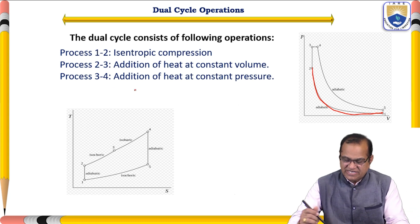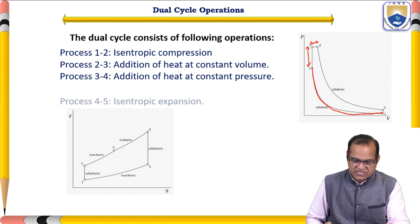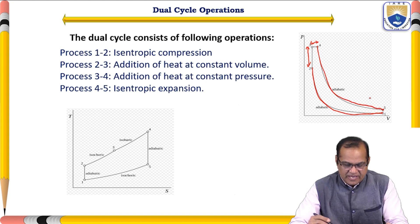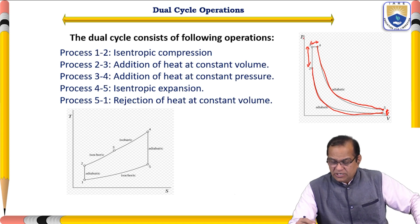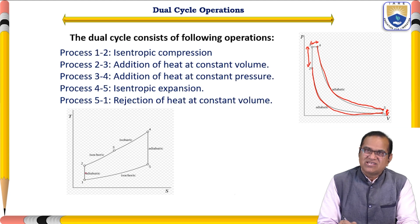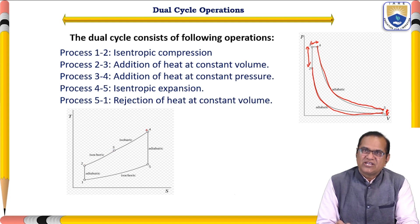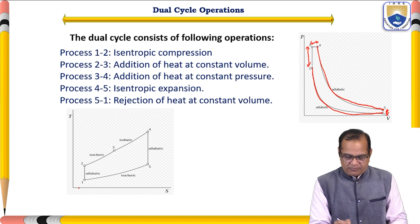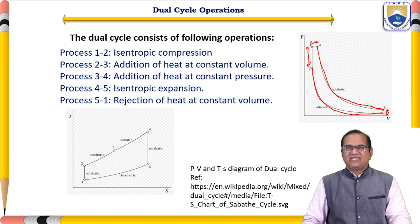From three to four is addition of heat at constant pressure. Process four to five is isentropic expansion, and process five to one is rejection of heat. On the T-S diagram, the pressure range is very high. To summarize: one to two is adiabatic or isentropic; two to three is isochoric; three to four is isobaric; four to five is adiabatic; and five to one is isochoric heat rejection. This PV and T-S diagram is taken from Wikipedia.